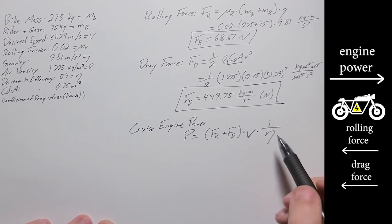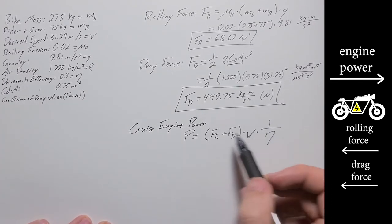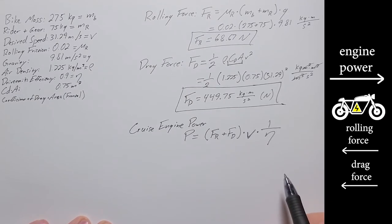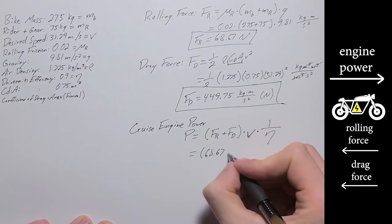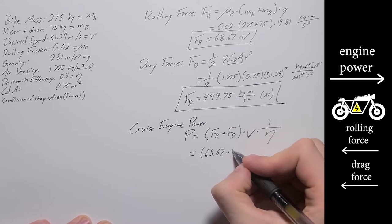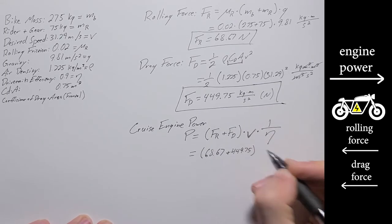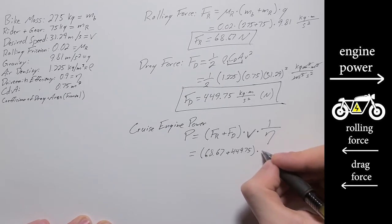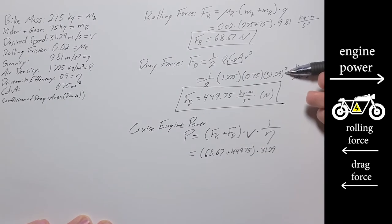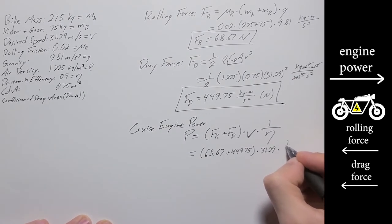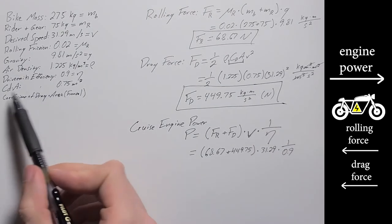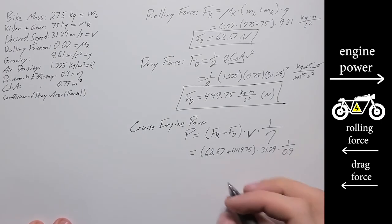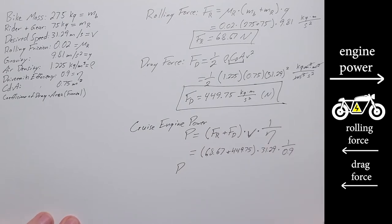So this efficiency factor is going to directly affect the engine power. We're baking that into the engine power itself. So this is going to come out to 68.67 newtons rolling force plus our 449.75 newtons drag force multiplied by our velocity. So that's going to be the 31.29 meters per second, times 1 over 0.9, which is our drivetrain efficiency that we're assuming.